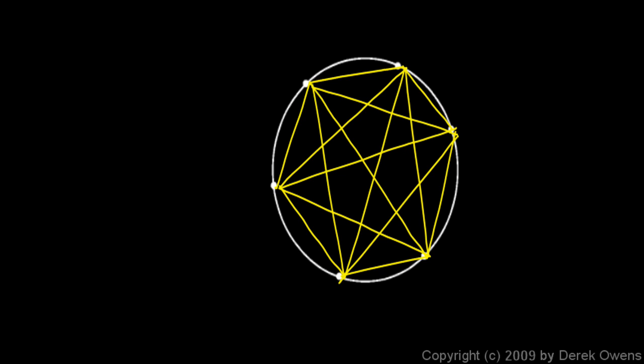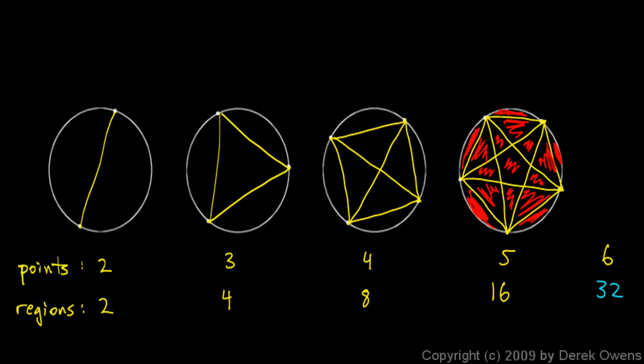Now let's count the regions. Now let's look back real quick at this one. Remember, we're expecting 32. We see this pattern with two points, then three, four, five, and now we're at six. And we see these numbers that we were getting before, two regions, four regions, eight, 16. So we're expecting 32.